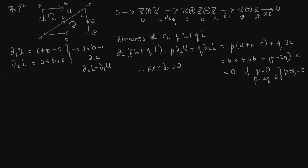Therefore this is an injective map. So image of delta 2 is generated by Z plus 2Z, where Z comes from A plus B minus C. This comes from A plus B minus C, and 2Z comes from 2C.